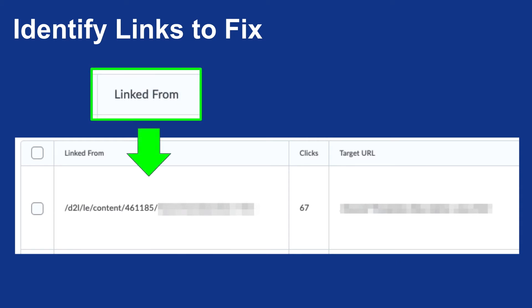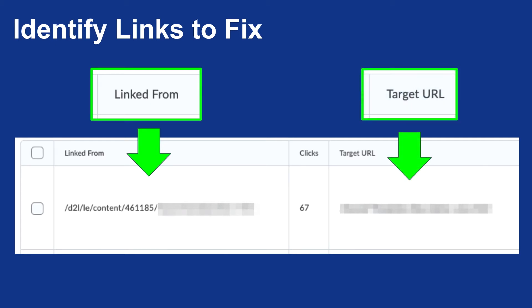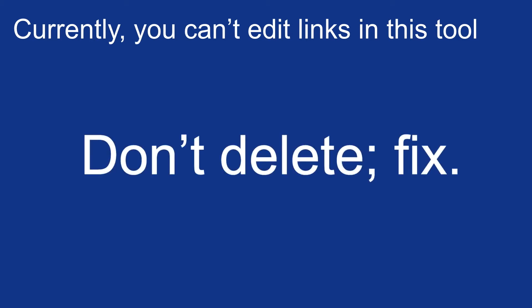On the left side, we first see a checkbox. Next, the linked-from category shows where in your course the link is located — that's the URL you can copy and paste into your browser to find the original broken link and fix it. The third column is the number of clicks, and the fourth column is the target URL — the broken URL you need to replace within D2L. The tool currently does not enable you to edit links within it, so rather than deleting, go to the original URL for each broken link in your course and replace the external link.